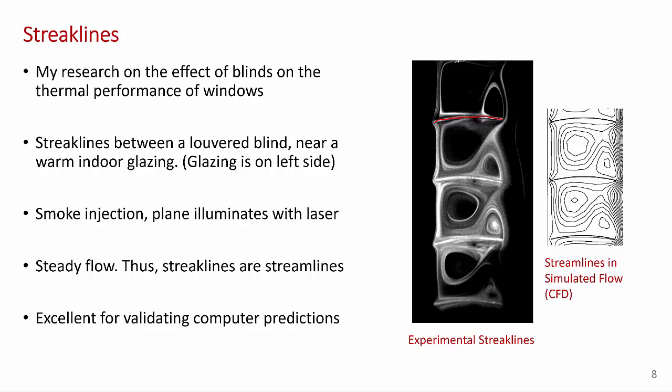So you can see the beautiful flow pattern that forms between the open blind slats. This is a steady flow. So the streak lines are equivalent to streamlines. And a big motivation for doing this experiment was that we wanted to validate the streamlines from a simulated flow using computational fluid dynamics. You can see the agreements pretty good. So this approach can be excellent for validating computer predictions of flow.